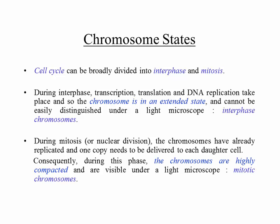Without a growth phase, if you keep on dividing the cell, it would get progressively smaller in size — that happens in the first few divisions of a fertilized egg. During interphase, transcription, translation, and DNA replication take place, and the chromosome is in an extended state because you need to access the DNA for RNA polymerase and DNA replication. So you cannot easily distinguish the chromosomes under a light microscope in this state — these are referred to as interphase chromosomes.